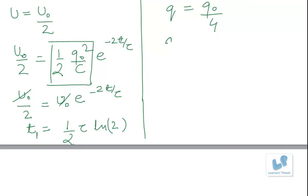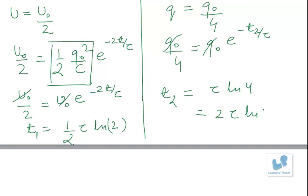Here if you substitute the values, Q0 by 4 is equal to Q0 e to the power minus time T2 by Tau. Now if you solve this, you will get time T2 as Tau log 4 which can be written as 2 times Tau log 2.